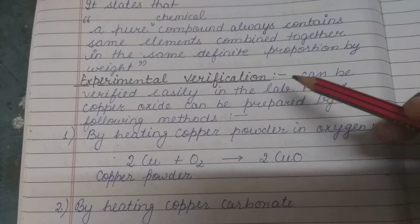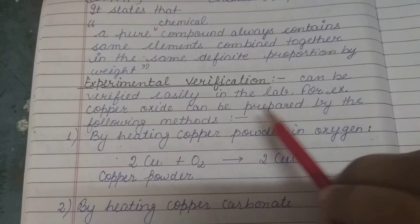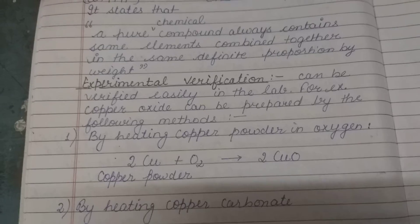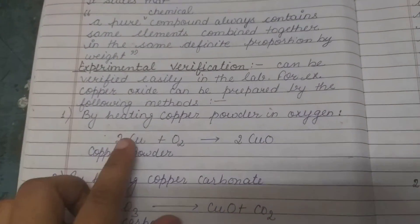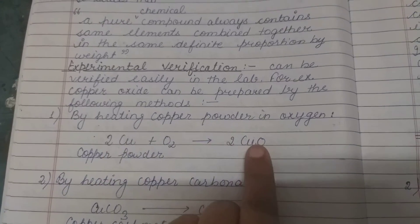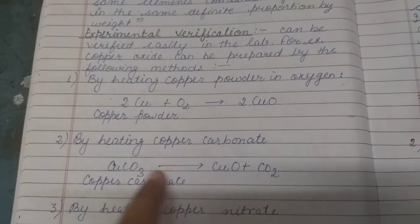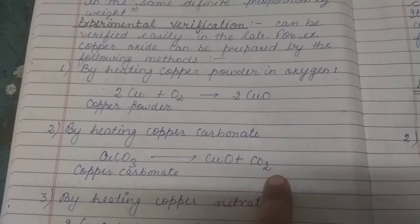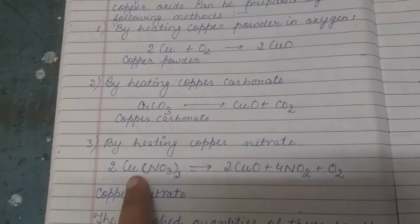Experimental verification: This can easily be verified in the lab. For example, copper oxide can be prepared by different methods. First method: by heating copper powder in oxygen. Second method: by heating copper carbonate, which decomposes to CuO and CO2. Third method: by heating copper nitrate.